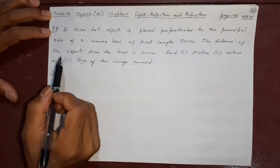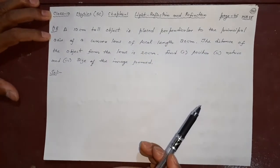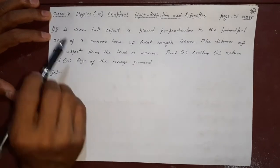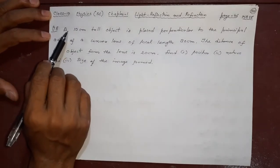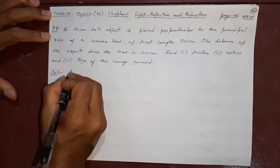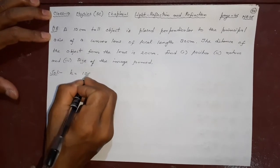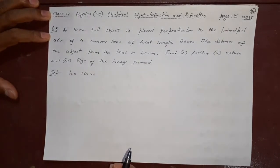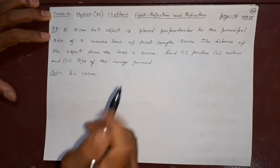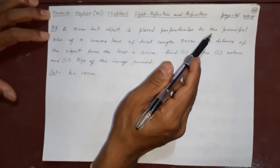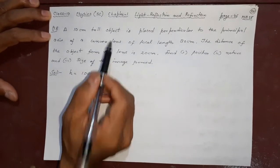In this numerical, you can find this in your textbook page number 46 also. This question is like this: a 10 centimeter tall object, that means the height of the object is 10 centimeter. Remember, object height is always positive because it is kept upside, is placed perpendicular to the principal axis of a convex lens.